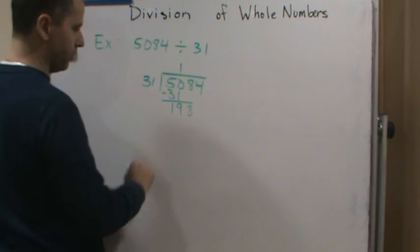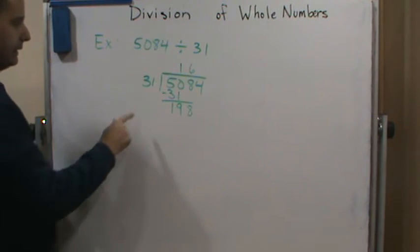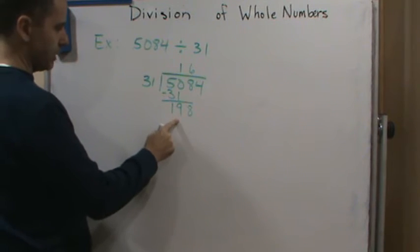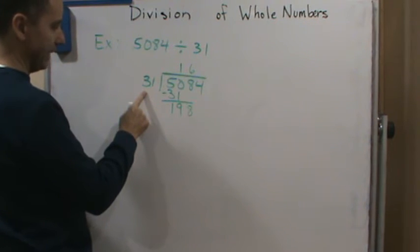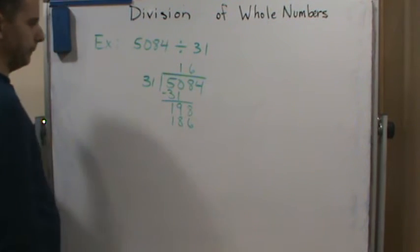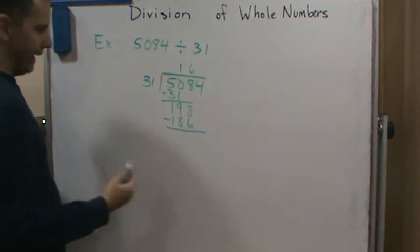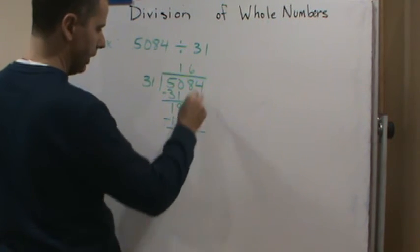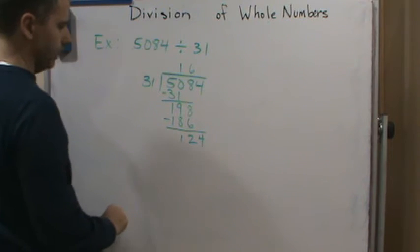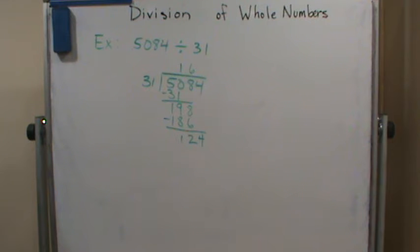And now I want to know how many times 31 goes into 198. Okay, now in this case here it's going to be 6. Okay, so 31 times 6 is 186. So I'm going to subtract 186, and I get 12. And now I'm going to drop down the 4.